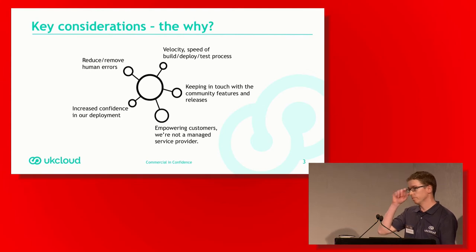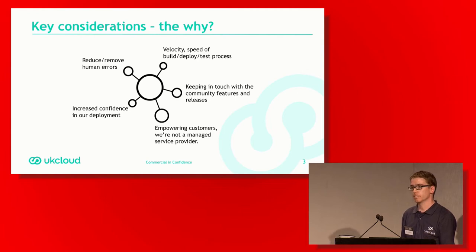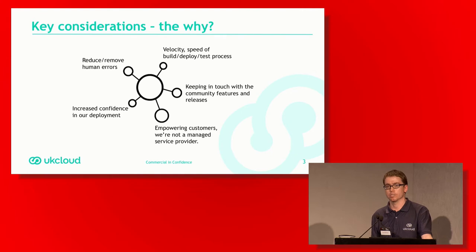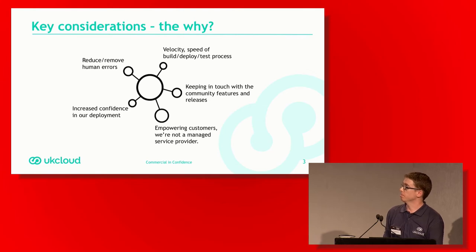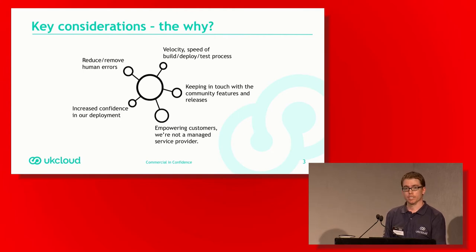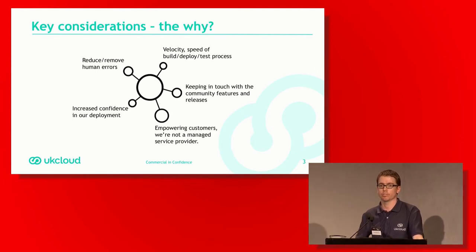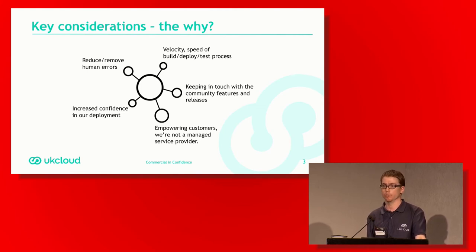The why is probably fairly obvious. We obviously reduce and remove the human error side of things. We can significantly increase the speed of our deployment process. When we started, it was taking us the best part of a day to a day and a half to manually build a cluster. Now we're down to 40 minutes end to end — from no service to a fully running service. It enables us to do in the region of 20 to 30 customer builds a day if we need to. It also means we can keep up to date with community releases. Defining things in code makes it much easier to integrate OpenShift with our other services, and the consistent baseline across all deployments means our confidence in our deployment is much greater.